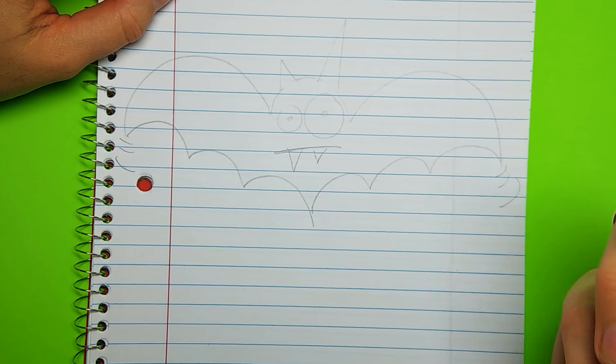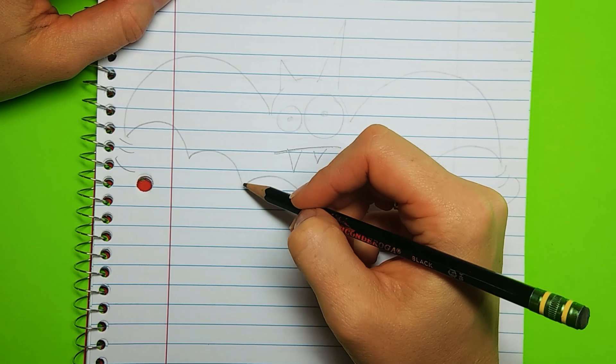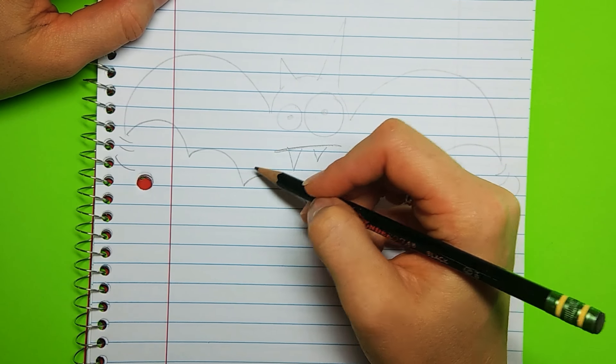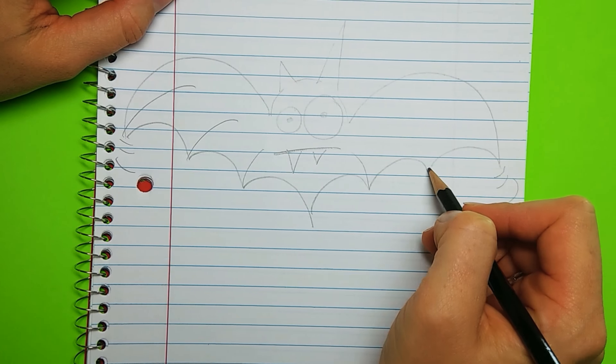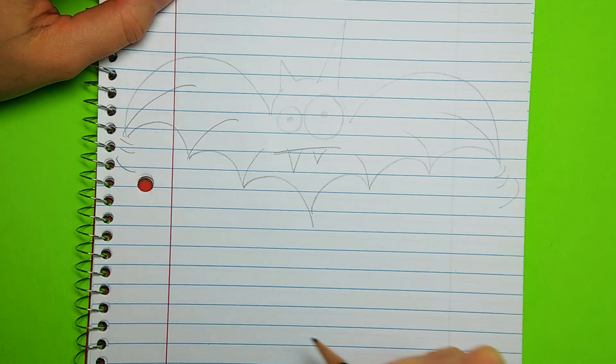If you want a little more detail, you can go in where the points meet on the wings and give it one, two, three half circles. One, two, three half circles again.